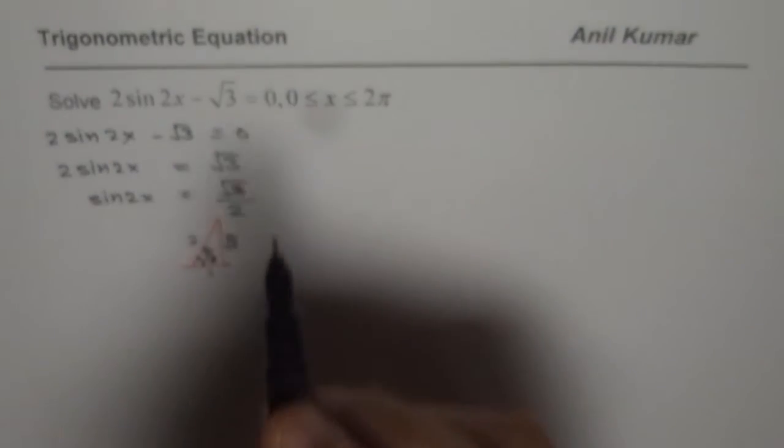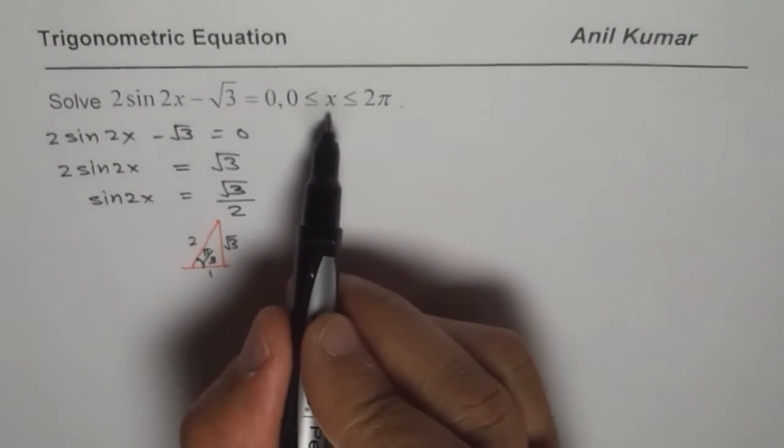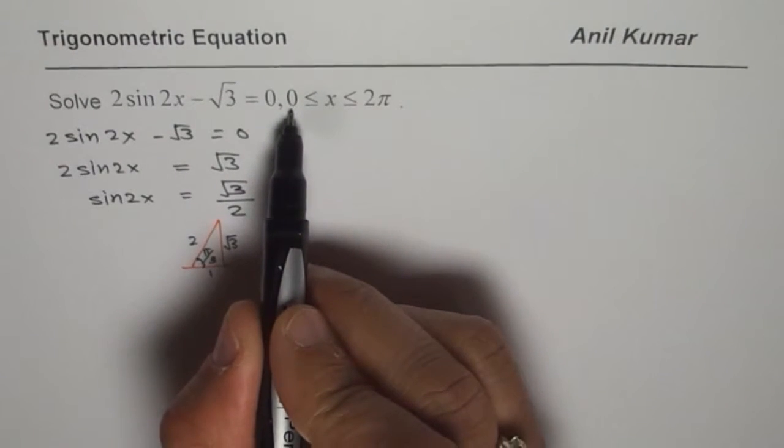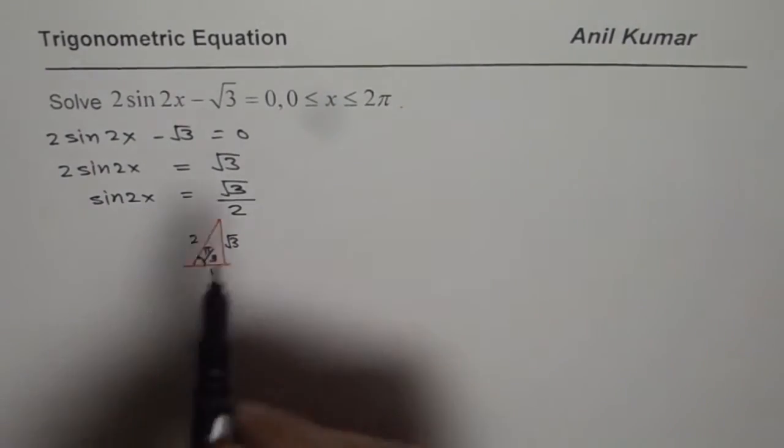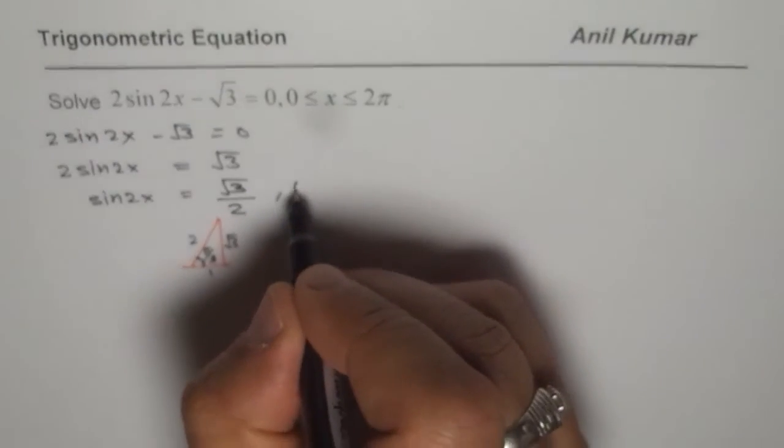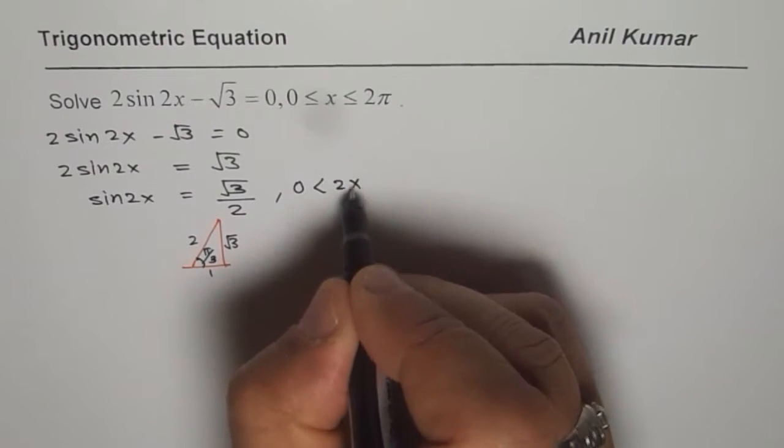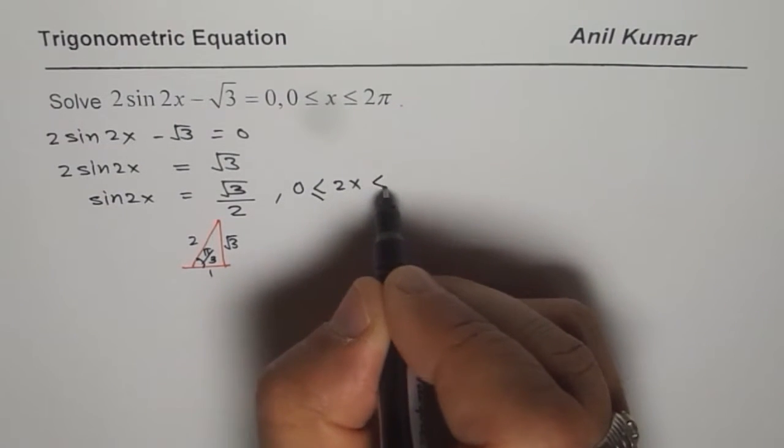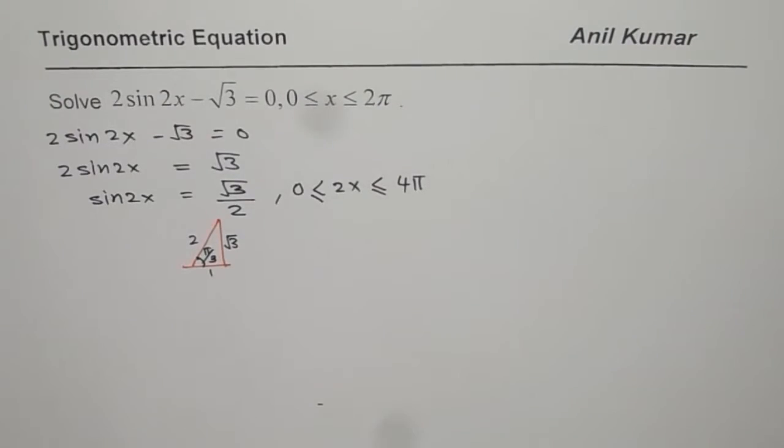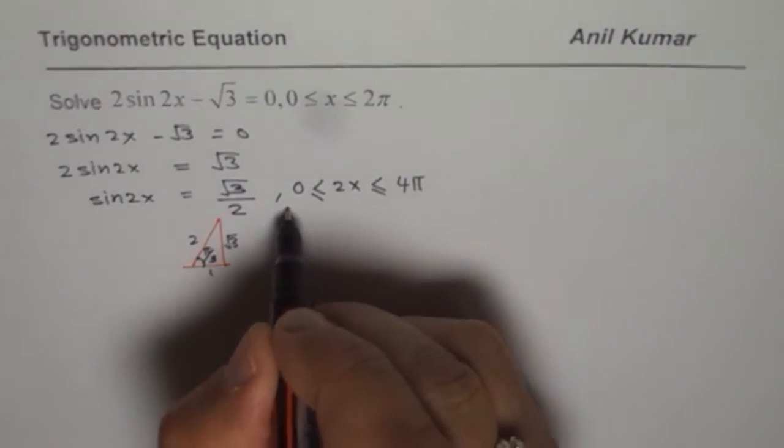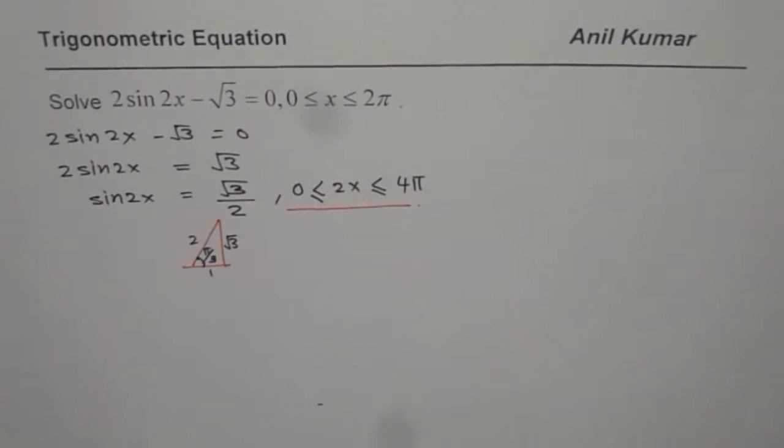Now the important thing to check here is the domain. Domain is 0 ≤ x ≤ 2π, but for us we have sine of 2x, so we have to multiply this by 2, so instead of 2π it becomes 4π. Multiply each by 2—that becomes the modified domain.